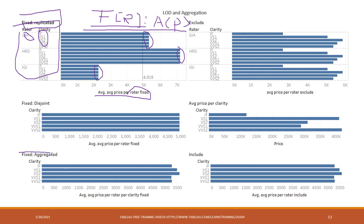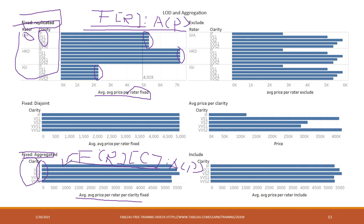In this case, I'm using FIXED where I specify rate, price, and clarity, colon, average price. I bring that to a view using clarity. The FIXED is based on rate and clarity per rater per clarity. In this case, the FIXED is more granular than the view, so the results are aggregated.